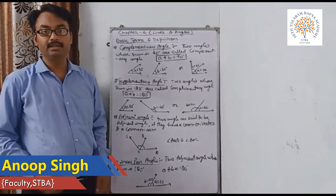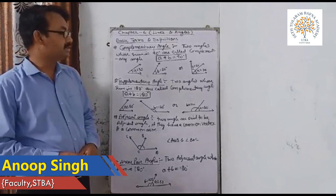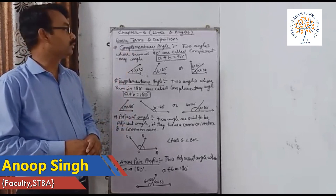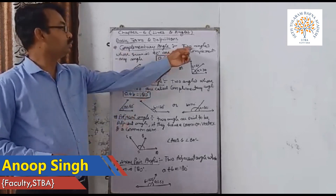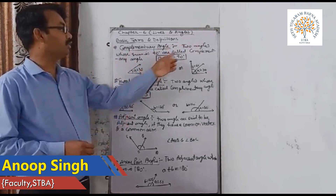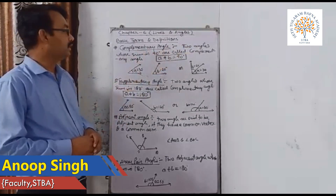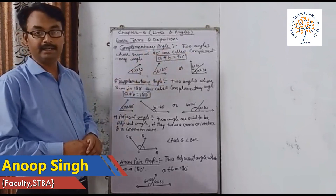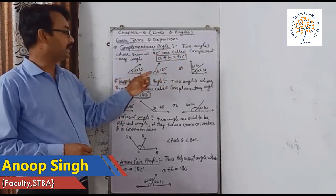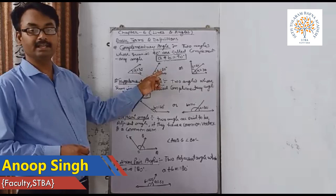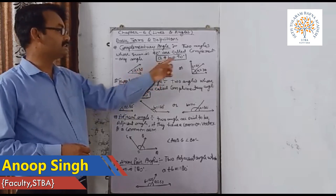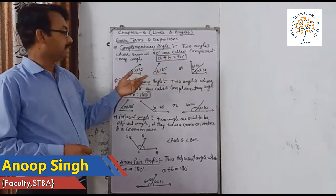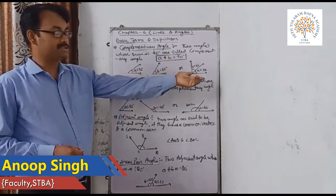Here are some more definitions regarding angles. A complementary angle: two angles whose sum is 90 degrees are called complementary to each other. For example, angle A plus angle B equals 90 degrees — if angle A is 30 degrees and angle B is 60 degrees, their sum is 90 degrees, so they are complementary. They can be different or adjacent.